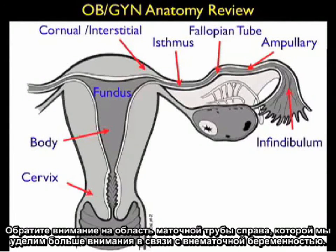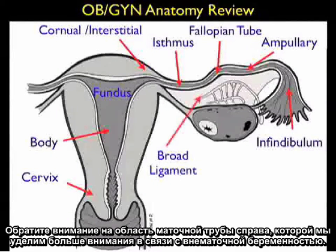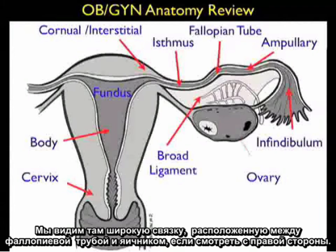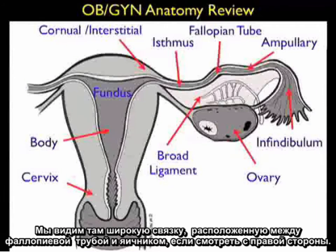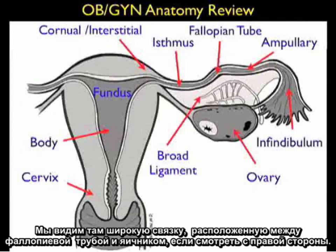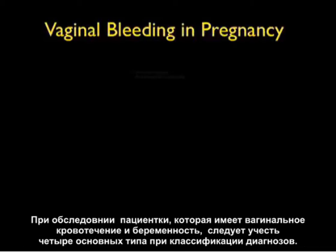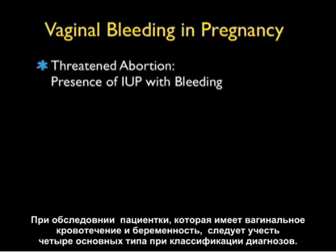Notice the areas of the fallopian tube to the right, which we'll concentrate more on with regard to ectopic pregnancy. We see the broad ligament there, encasing the fallopian tube and the ovary as seen to the right.